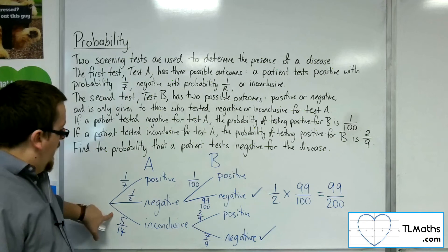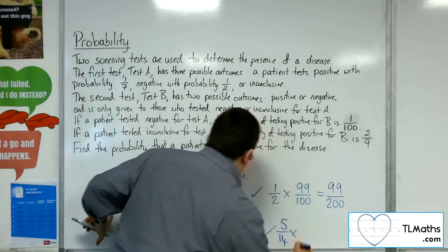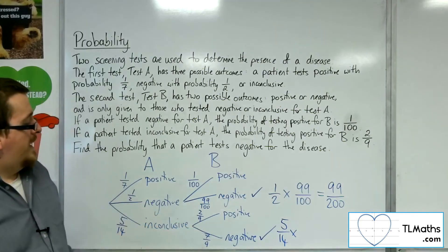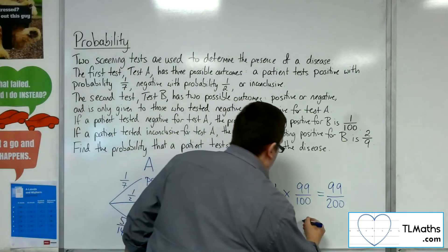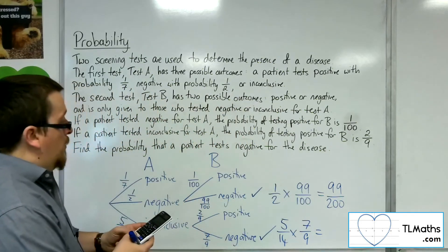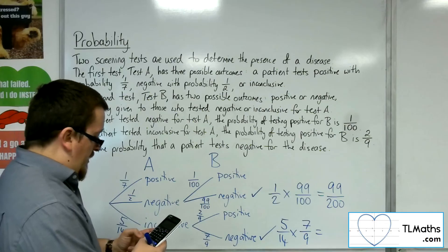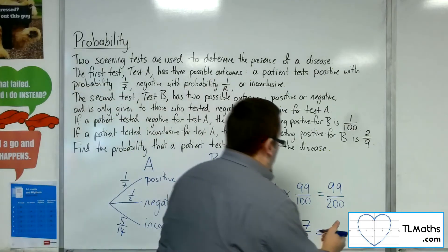And then, inconclusive, five-fourteenths. And then, they got negative on the second test, so seven-ninths. So, five times seven divided by fourteen times nine, and that's five-eighteenths.